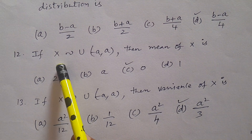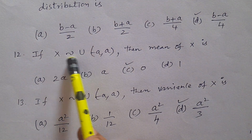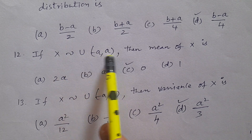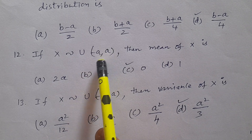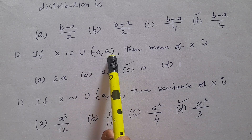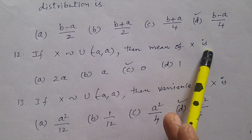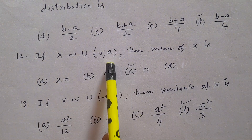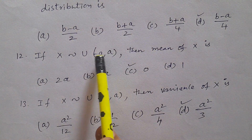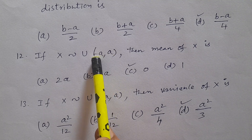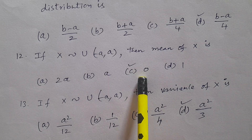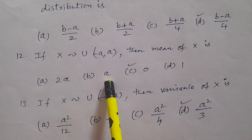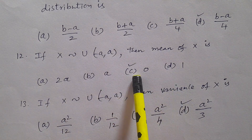Question number 12: If x follows uniform distribution U in the range -a to a with parameters -a to a, the mean of x is — using the formula (b+a)/2, here b = a and lower limit = -a, so (a + (-a))/2 = 0. Options: A. 2a, B. a, C. 0, D. 1. Answer is C: 0.